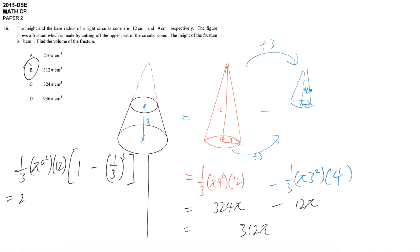This gives you 324π times 26/27, which also yields the same answer, 312π.